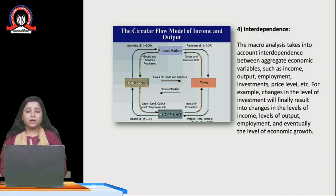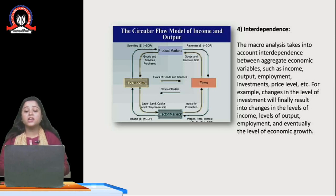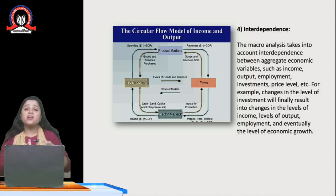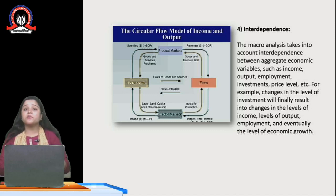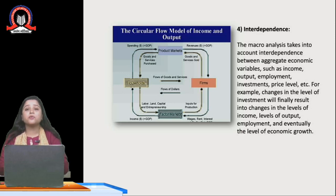The next feature of macroeconomics is interdependence. Macroeconomics takes into account the interdependence between aggregate economic variables such as income, output, employment, investment, and price level — all of which are interdependent. For example, if there is a change in the level of investment, it will result in a change in the level of income, change in the level of output, and change in the level of employment, and eventually a change in the level of economic growth, because all these variables are interrelated with each other.